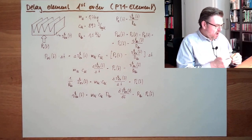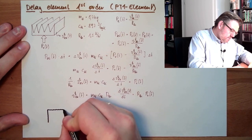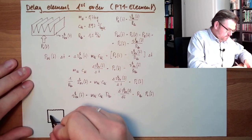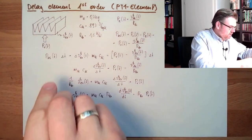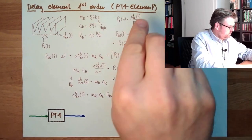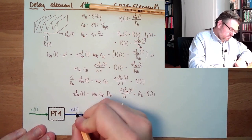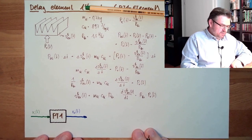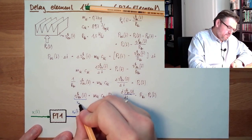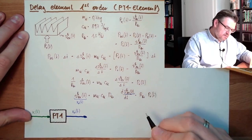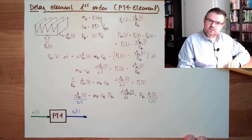Here is our PT1 element as a block diagram. There is an input Xi(t) and an output XO(t). In our case, XO is the excessive temperature, and Xi(t) is the added power - we want to know: given a certain input power, what is the resulting over-temperature?